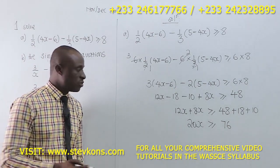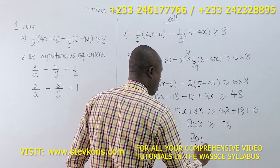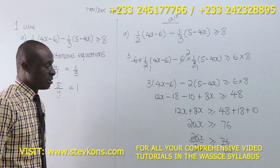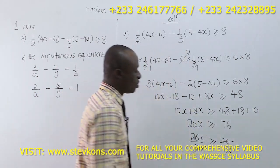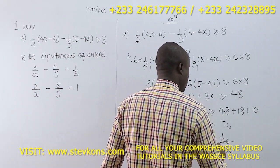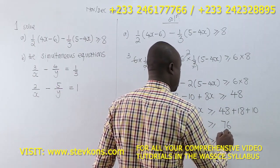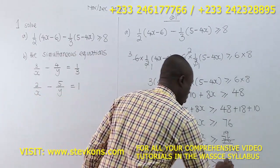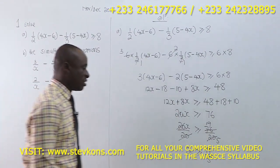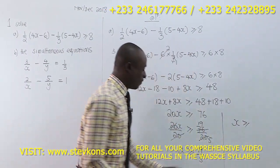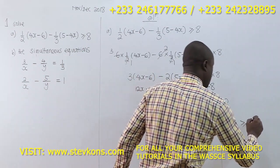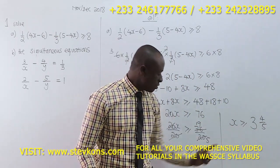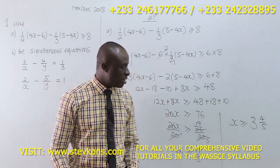We divide both sides by 20 — what is multiplying x — so we have 20x over 20 greater than or equal to 76 over 20. This cancels out. Now 4 goes into 76: 4 goes into 36 nine times, 4 goes into 20 five times, so x is greater than or equal to 19/5, which is 3 and 4/5. Because 5 times 3 is 15, and 15 plus 4 is 19.